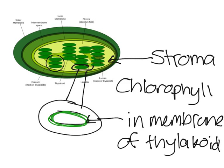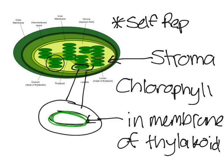A cool fact about chloroplasts is they can self-replicate, which essentially means they just divide on their own and split into two.